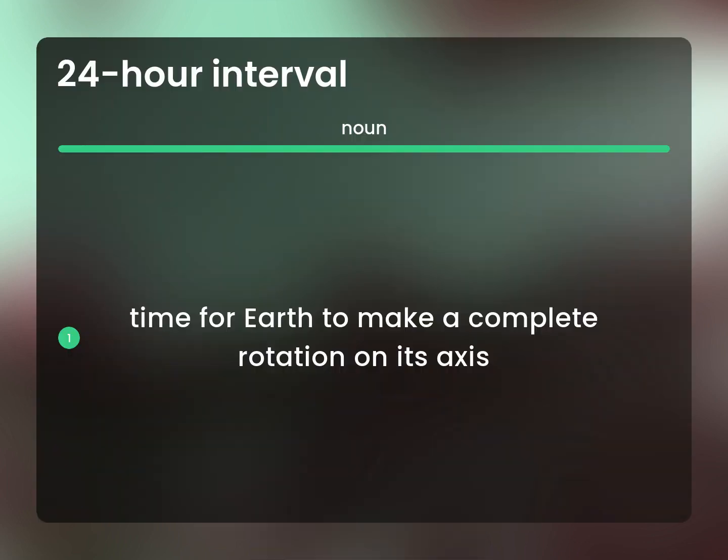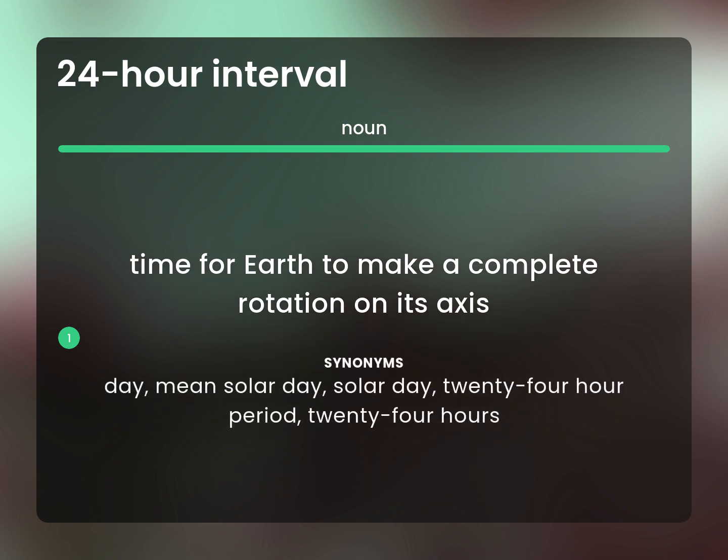Day: the time for Earth to make a complete rotation on its axis. Day means solar day — a 24-hour period, 24 hours.